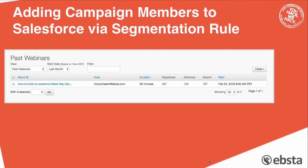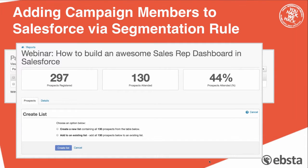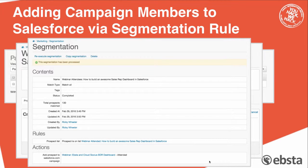Let's look at a webinar we did last week: 'How to Build an Awesome Salesforce Dashboard in Salesforce' — there's a tongue twister. We had 130 people attend that webinar. In Pardot I can click on that 130, which brings up this screen, and I'm able to create a list of those 130 people. Then I can use a segmentation rule, and you can see the rule says prospect list is 'Webinar Attended: How to Build an Awesome Salesforce Dashboard in Salesforce.' So I've just added those 130 people to that list.